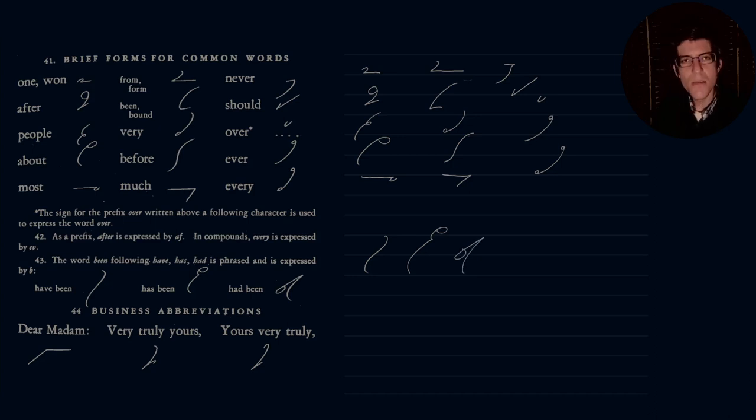So it's expressed by B. So have been, has been, had been. And then our previous business abbreviations are dear madam, or DM me. No, I don't think that's what Gregg was saying. DM, dear madam. Very truly yours is V and then T, T, U. Very truly yours. And then yours very truly, the U hook, V, and then T. Yours very truly.